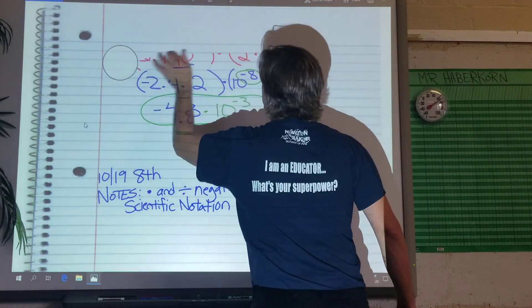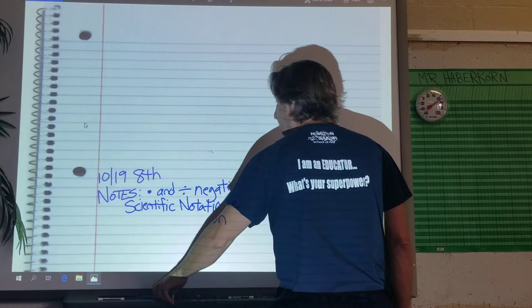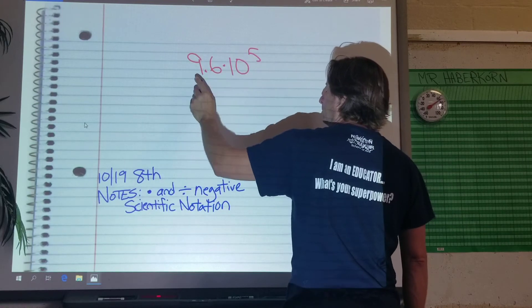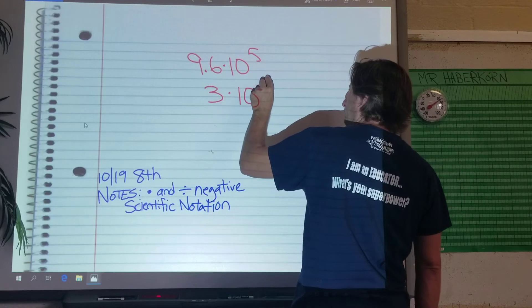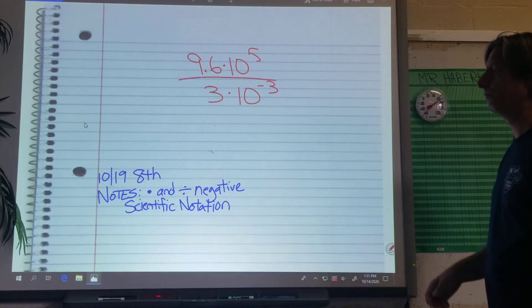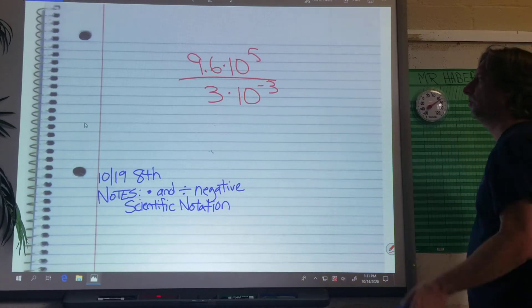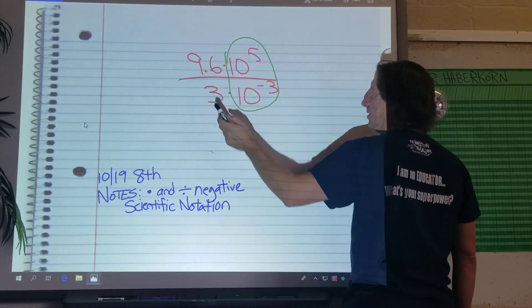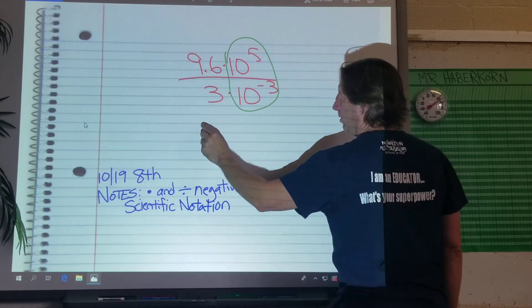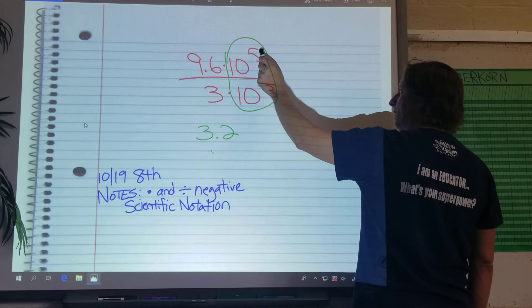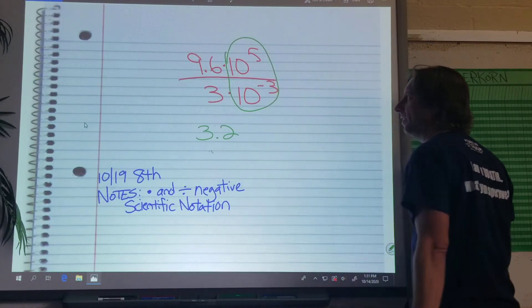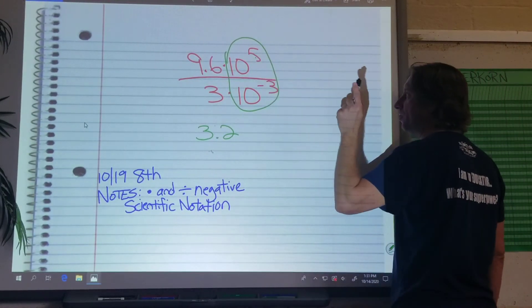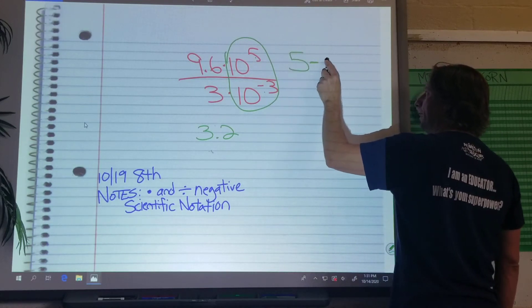Now the division ones are kind of the same. So we do, we have two problems here, basically. We have this one. Look at this one. This one's easy. 9.6 divided by 3. You use your calculator. You get 3.2. Now this is tricky. I have 5 minus negative 3. It's not 2. It's not 2. That's where you're confused.